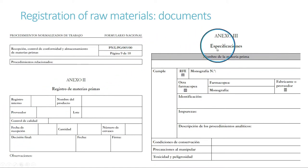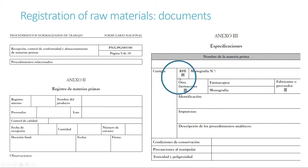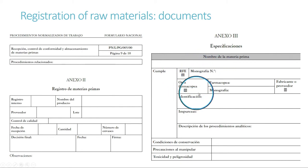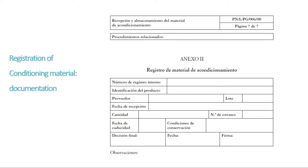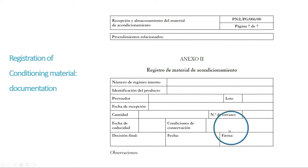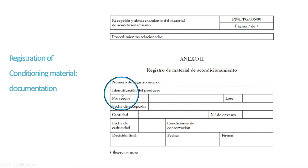There is also information regarding the pharmacopoeia specification — whether it is a pharmacopoeia material or not, the monography number, etc. In this next slide we also have the information from the national formulary for the conditioning material. You can see that this table contains similar information to that of the bulk materials: a register number, an ID of the product, the lab, the batch number, reception date, and so on.